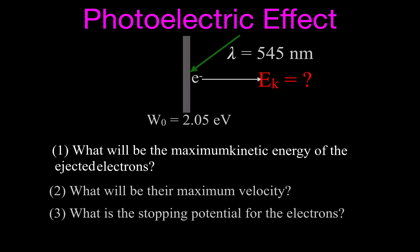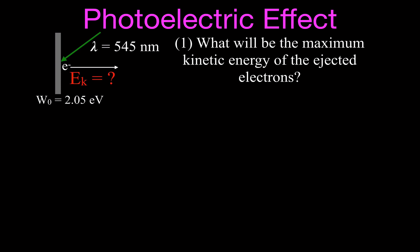We're going to answer those three questions, starting with the maximum kinetic energy of the ejected electrons. For the photoelectric effect, the light coming in represents the total energy. Some of that energy is used to meet the work function, and the leftover energy goes to the electrons as kinetic energy. The equation is: kinetic energy equals Planck's constant times the frequency of the light, minus the work function.